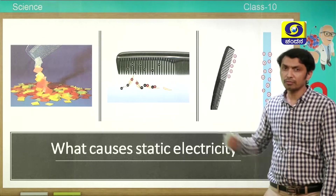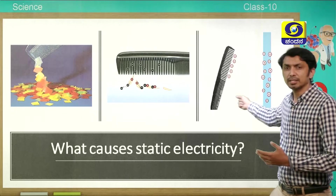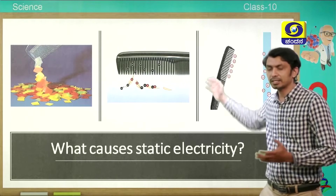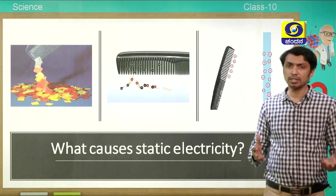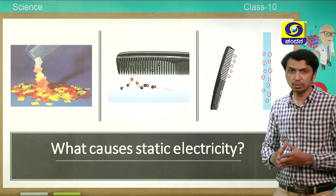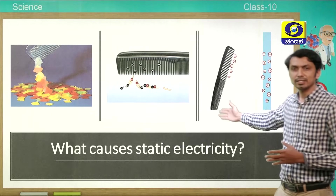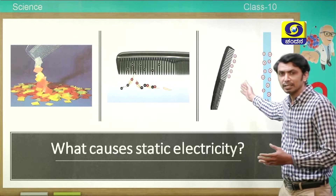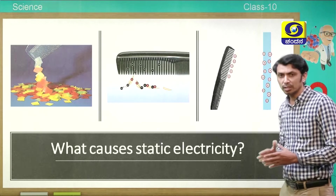All of you have done this activity using a comb. If we comb our hair and bring that comb near to paper, the paper pieces get attracted to the comb. In the balloon activity, the balloon was attracting the hair. Here, the paper pieces are getting attracted to the comb. The reason is static electricity — the charges present at the ends of the comb attract the negative charges on the pieces of paper.